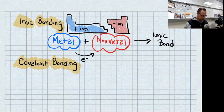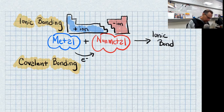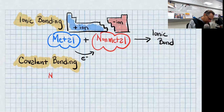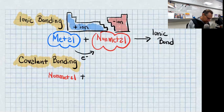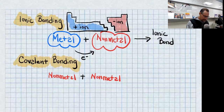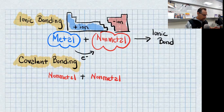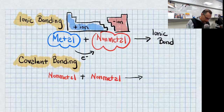Covalent bonding is significantly different than ionic bonding, because when I look at a covalent bond, basically what is happening is I have a non-metal and that non-metal is going to bond to another non-metal. So basically we're talking about the right side of the periodic table — that non-metal side — and when those bond together, that results in a covalent bond.